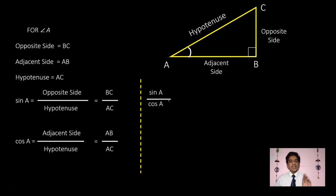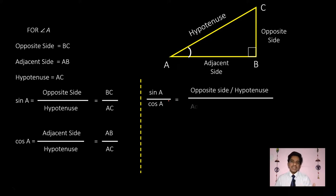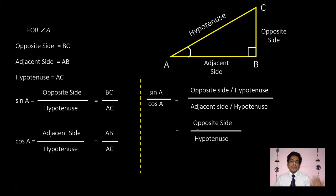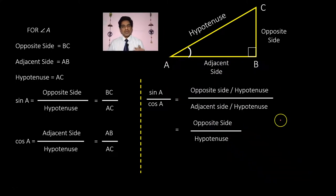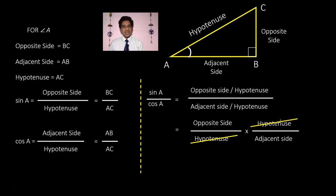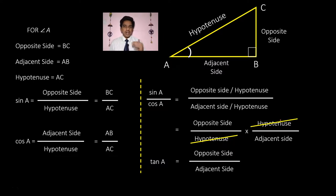Now if we find the ratio of sin A to cos A: sin A / cos A = (opposite/hypotenuse) ÷ (adjacent/hypotenuse). The hypotenuse cancels, giving opposite side by adjacent side. This ratio is called tangent of angle A, written as tan A. So tan A = opposite side / adjacent side = BC/AB.